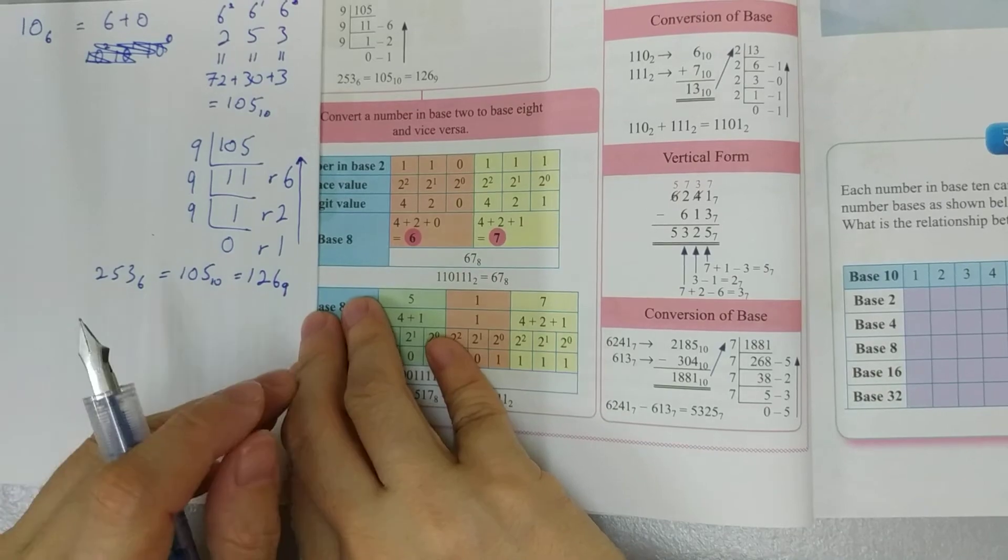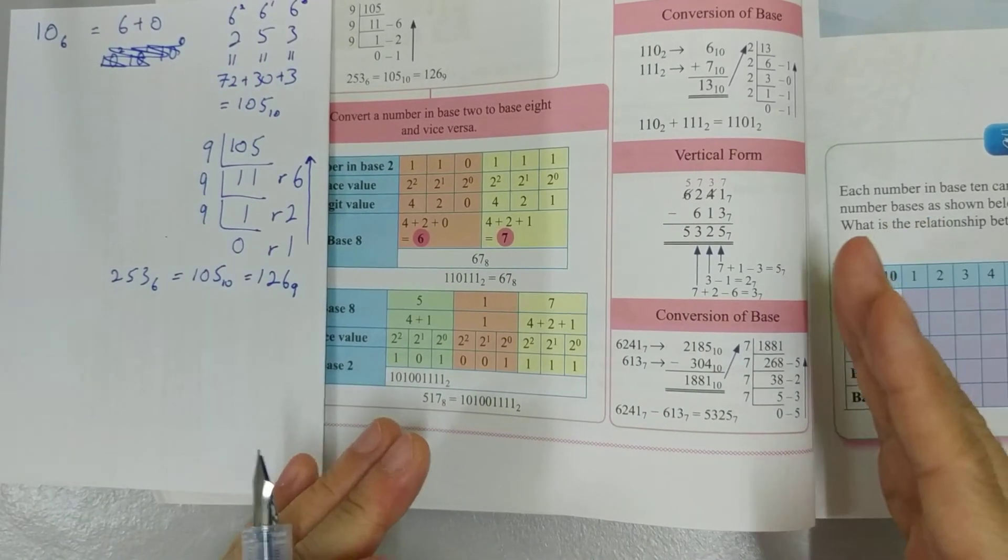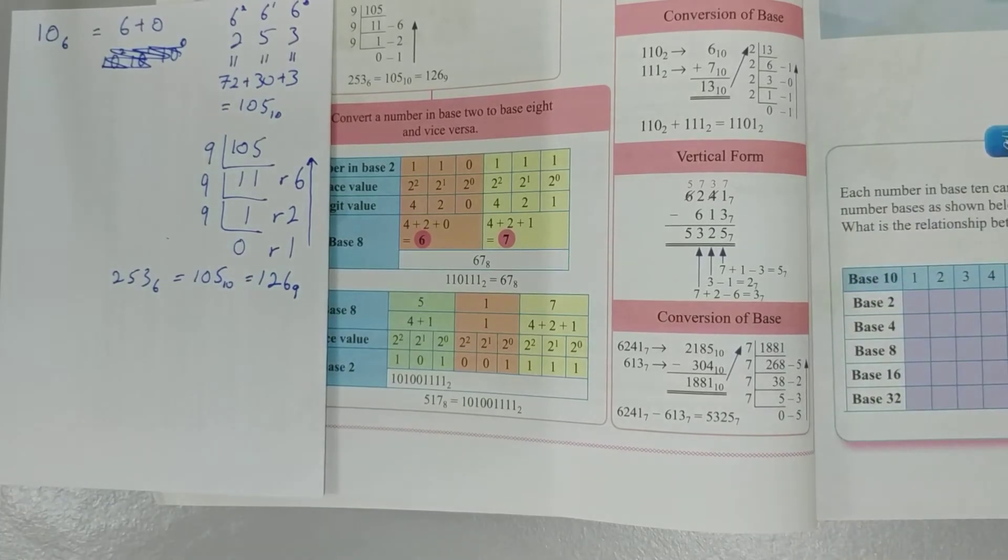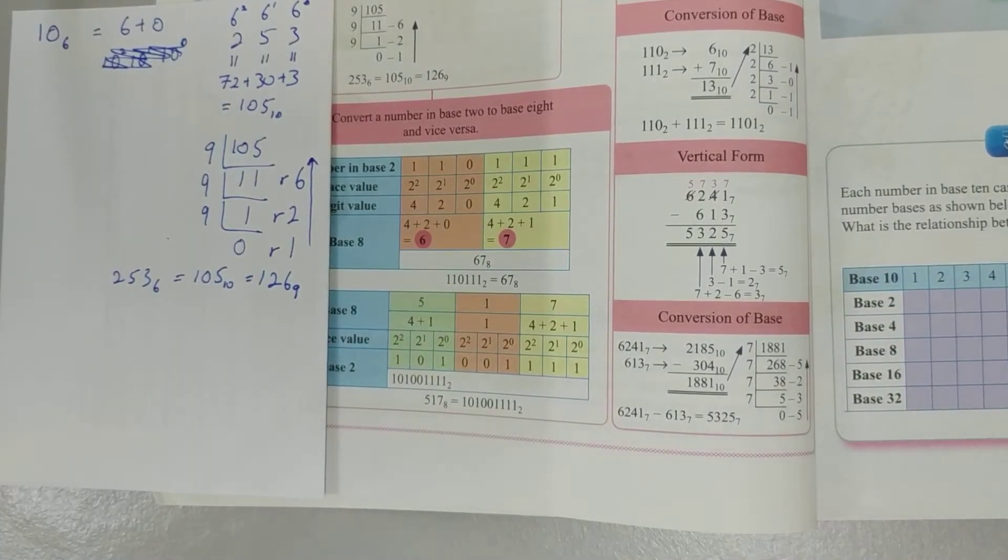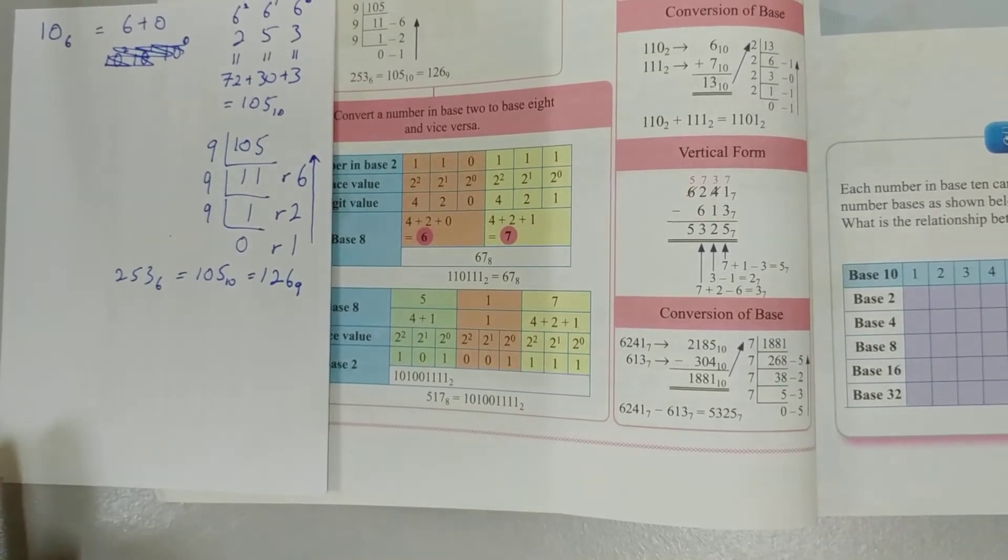Remember, when you have to convert from one base to another, change it to our normal numbers first, which is the base 10. And then only we change it to the new base.